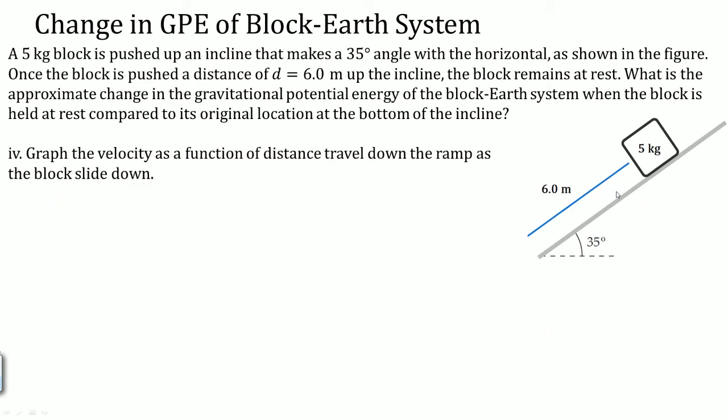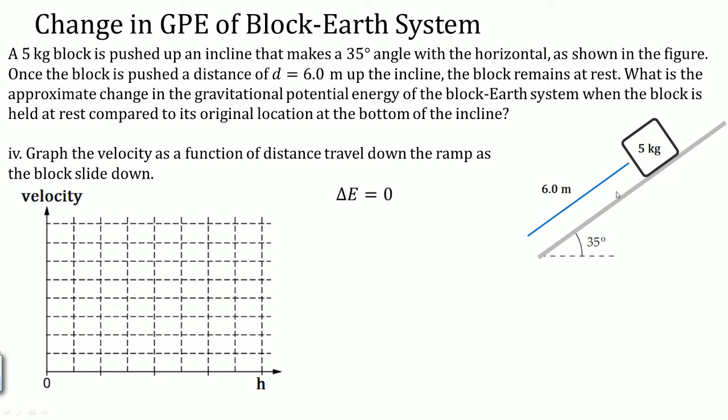With that being said, we could actually graph the velocity as a function of distance traveled down the ramp as the block slides down. Well we know that the potential energy of the system equals zero at the top, it's all potential. At the bottom it's all kinetic. Mass cancels, so it's just gh. We multiply two to both sides, now you can take a square root. So v equals the square root of 20h. If you graph this, as h increases on the graph, it looks like this.